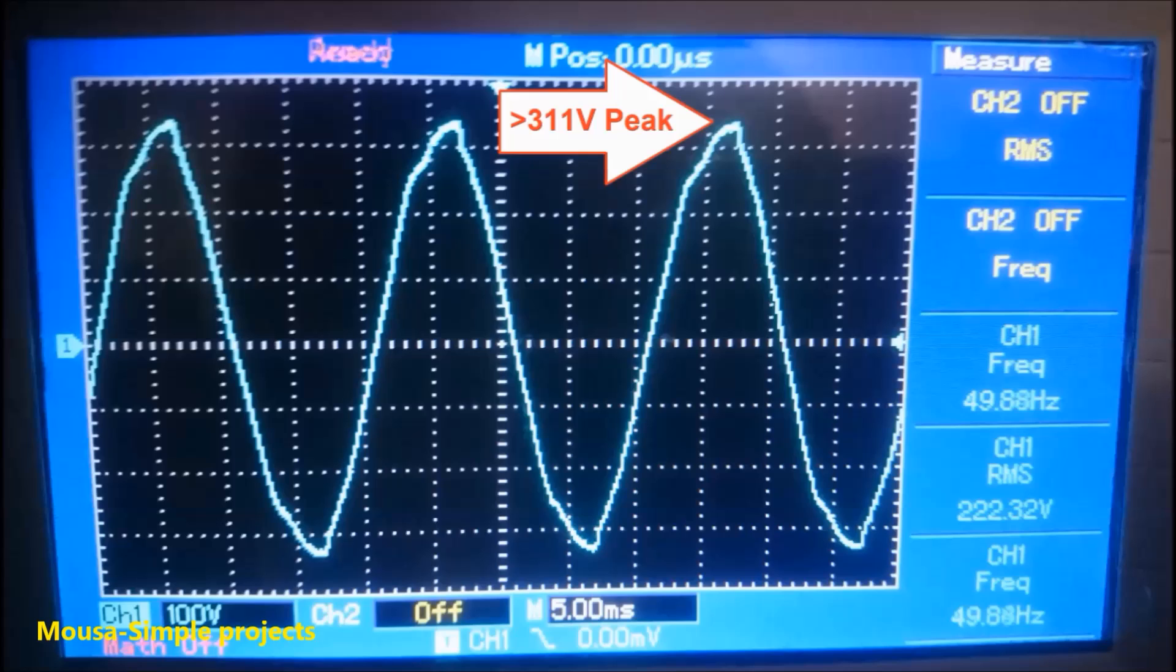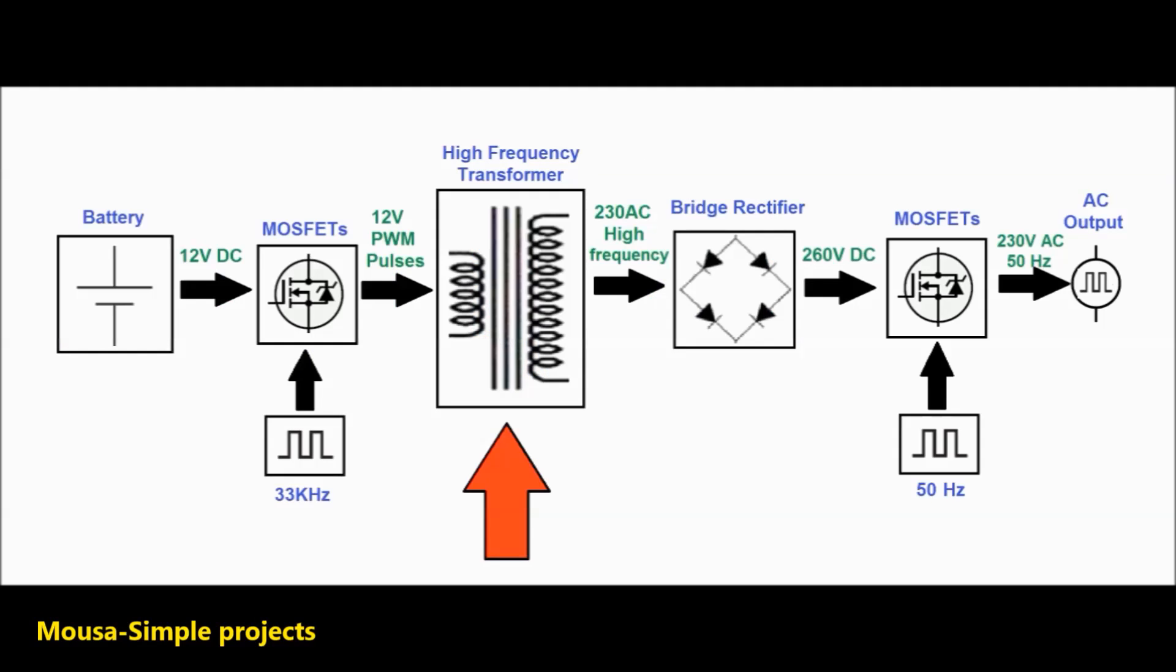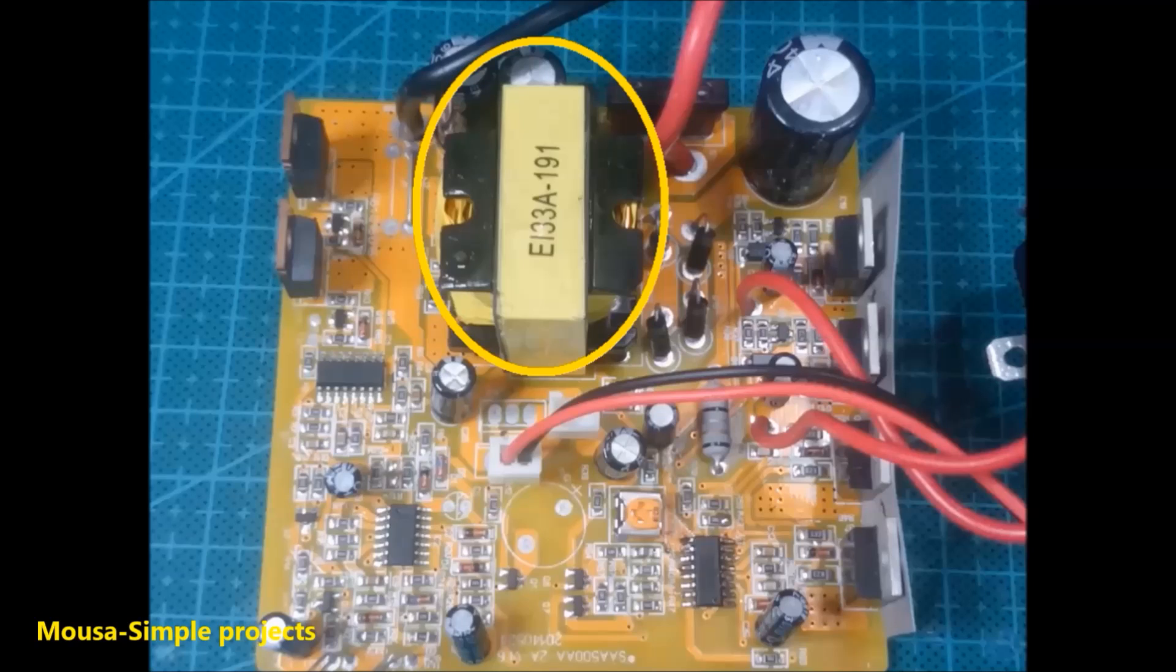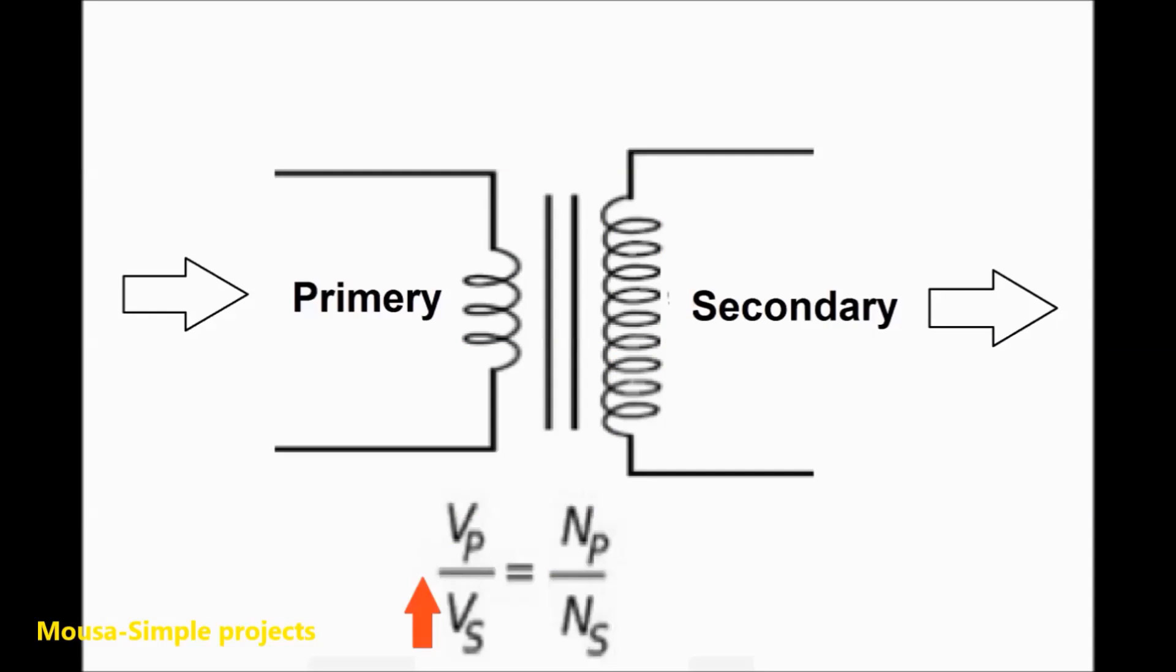So if you convert this inverter to pure sine without solving this problem, the output voltage will be 180 volt instead of 220 volt RMS. To solve this problem, you have to increase the output voltage. To increase the output voltage of any transformer, you have two ways.